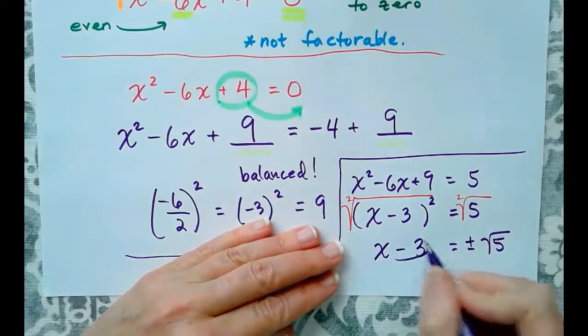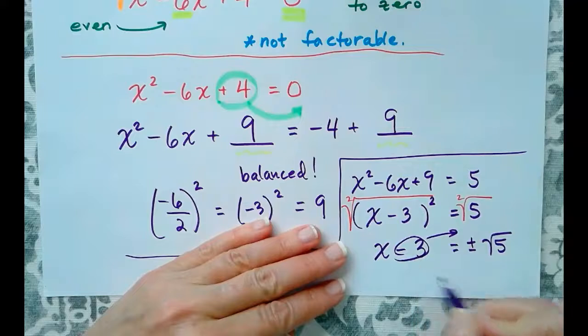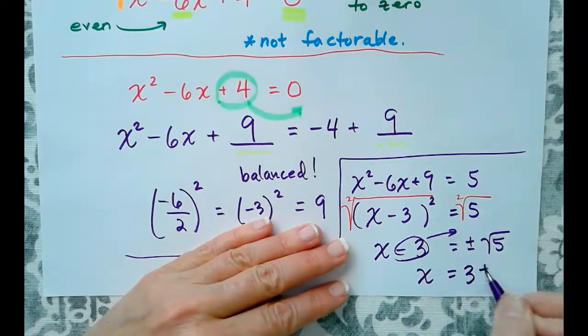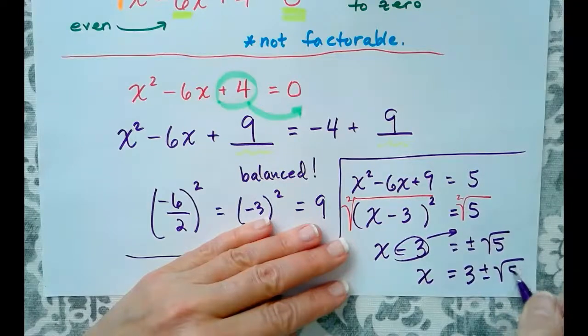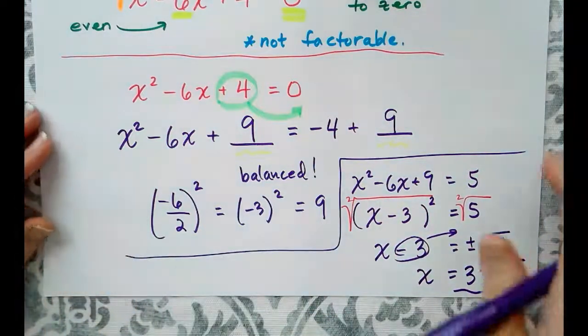To solve for x, we just need to move 3 to the other side. It's negative on the left. On the right, it will be positive. So, our solutions are positive 3 plus or minus the square root of 5. So, those are two distinct roots.